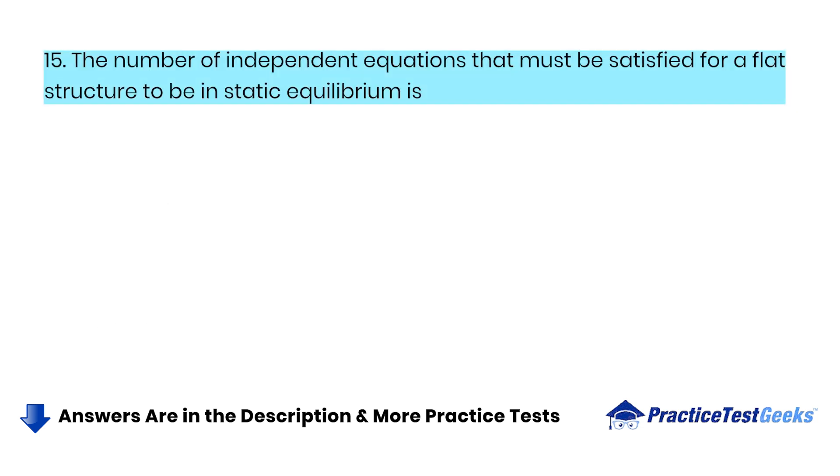The number of independent equations that must be satisfied for a flat structure to be in static equilibrium is A. 1. B. 2. C. 3. D. 4.